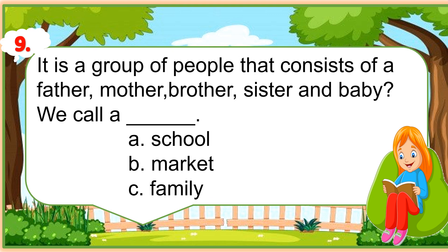Number 9: It is a group of people that consists of a father, mother, brother, sister, and baby. A. School. B. Market. C. Family. What's the correct answer?